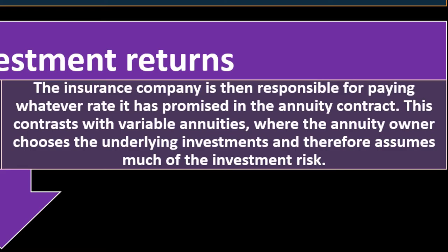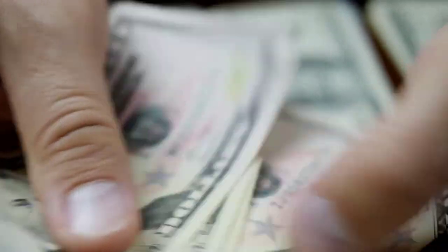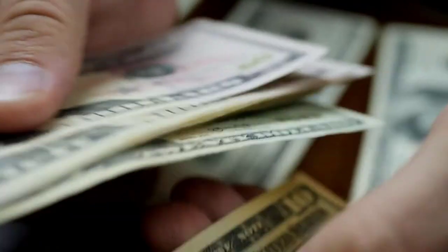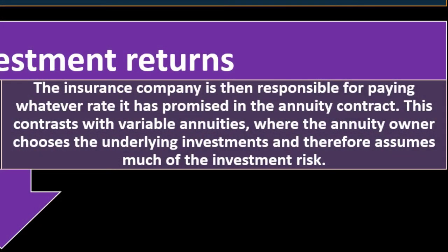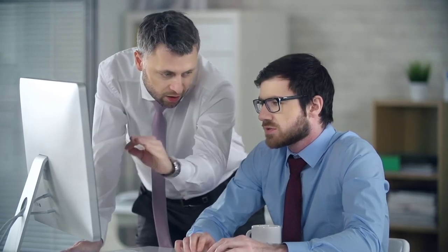If you tell the insurance company 'here's my money and I'm not going to take out the principal,' they have more leeway to invest and generate a return, then pay you what they promised in the contract. This contrasts with variable annuities, where the annuity owner chooses the underlying investments and therefore assumes much of the investment risk, rather than receiving a fixed guaranteed return.